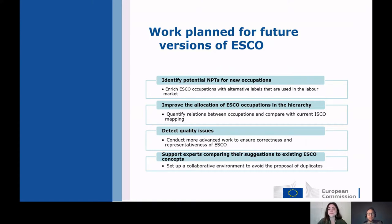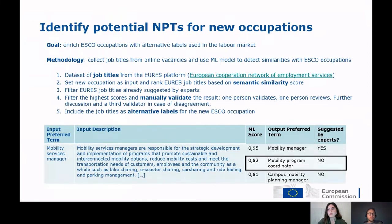In the next part of the presentation we provide use cases on how AI is being used today and how it will impact future versions of ESCO. The first use case is identifying potential alternative labels for new occupations. When proposing new occupations, we need a preferred term, a description, and alternative labels. Using a machine learning model, we take the preferred term and description as input and map it to a space of job titles extracted from EURES vacancies.